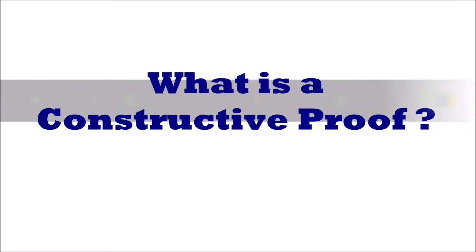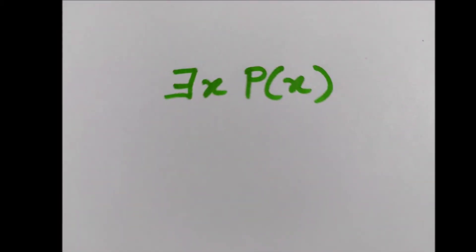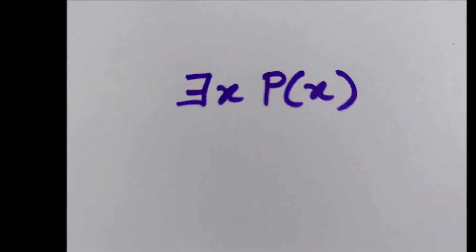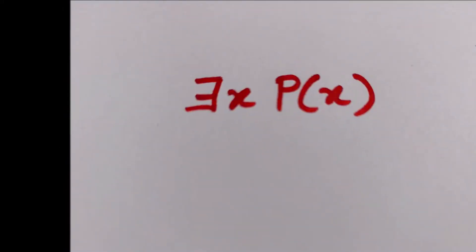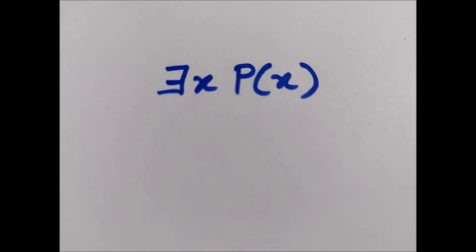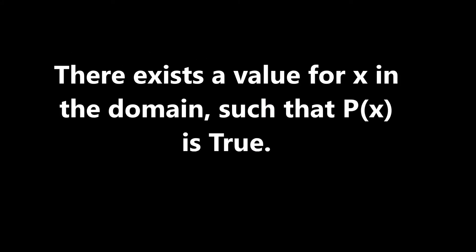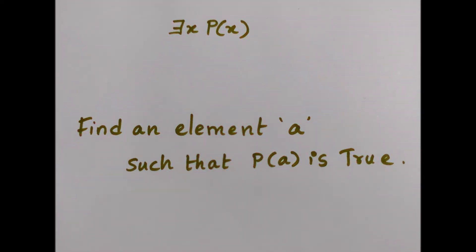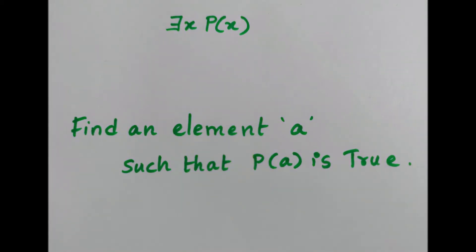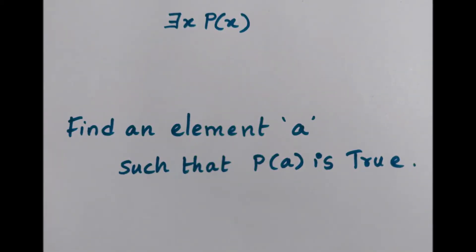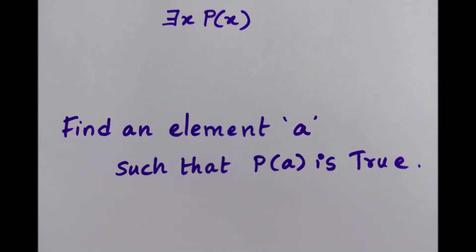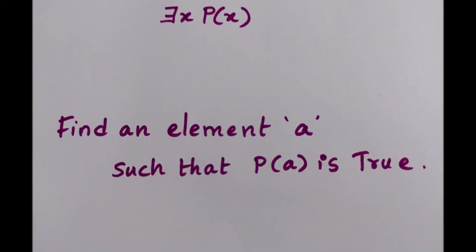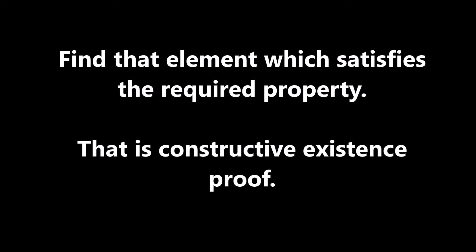What is a constructive existence proof? Our aim is to find a proof for the statement 'there exists P of X.' This is true when there exists a value for X in the domain where P of that value is true. So we just need to find that value for X for which P of X is true — we need to find an element A such that P of A is true. When we find such A, we are done. That is a constructive existence proof.